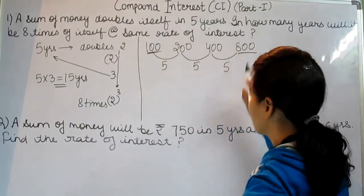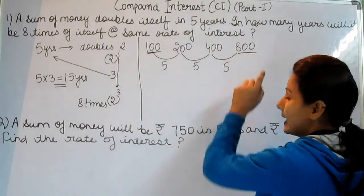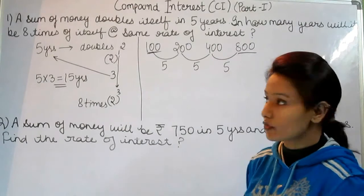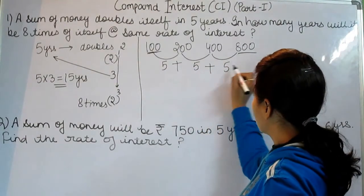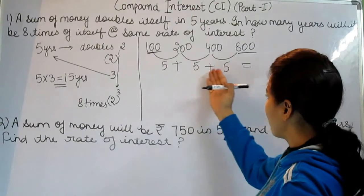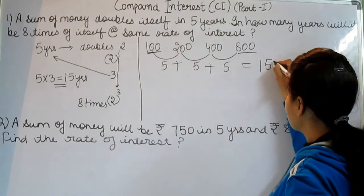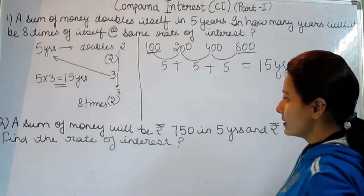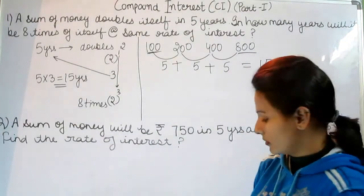Now we can see from 100 it becomes 800. It means 8 times. 100 to 800, it becomes 8 times. In how many years? Calculate these years: 5, 5, 5. And that is 15 years. So 15 years is the right answer.